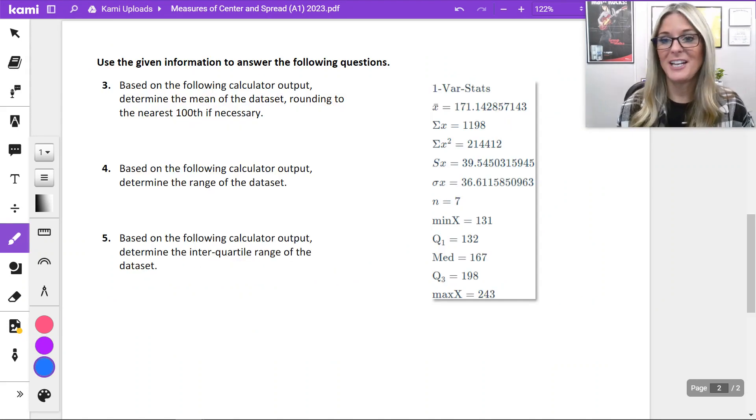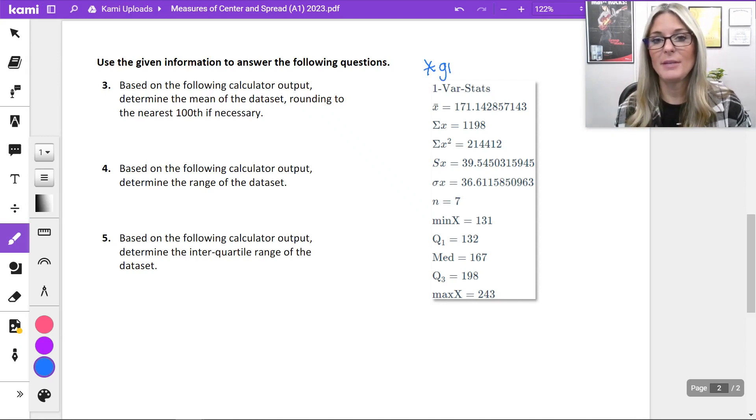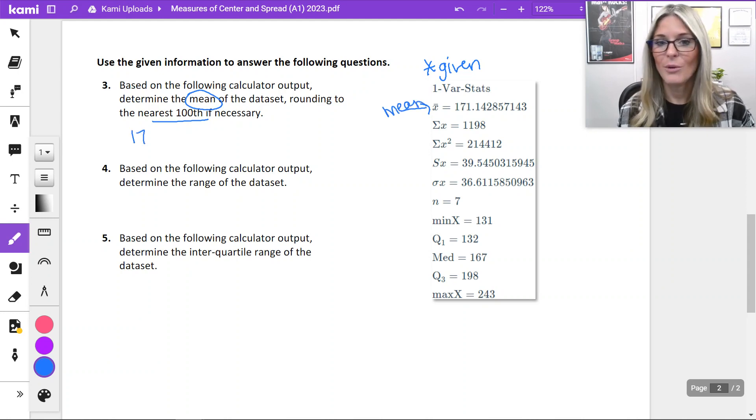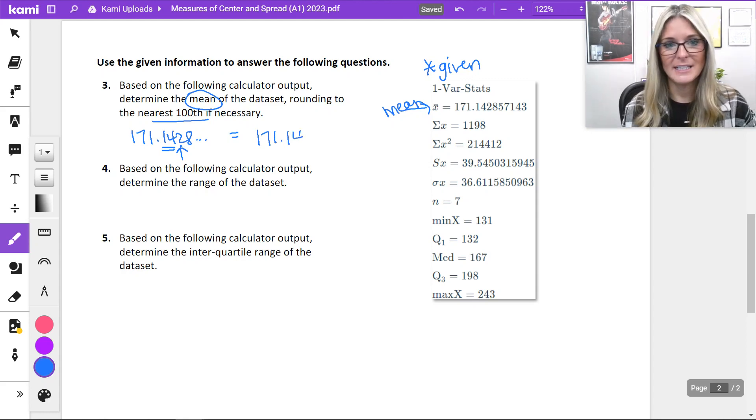And on the last page, we have one more section, mostly just interpreting the given calculator information. So this is going to be given to you on Delta Math. Notice it looks just like our calculator. So this is just practicing: do you know how to read these outputs from the calculator? Number three, based on the calculator output, determine the mean and round to the nearest hundredth if necessary. This is our mean. X bar represents mean. It is 171.1428 on and on and on. It said round to the nearest hundredth. That's the one and the four, two decimal places. The two says let it rest. So our mean rounded to the nearest hundredth, 171.14.